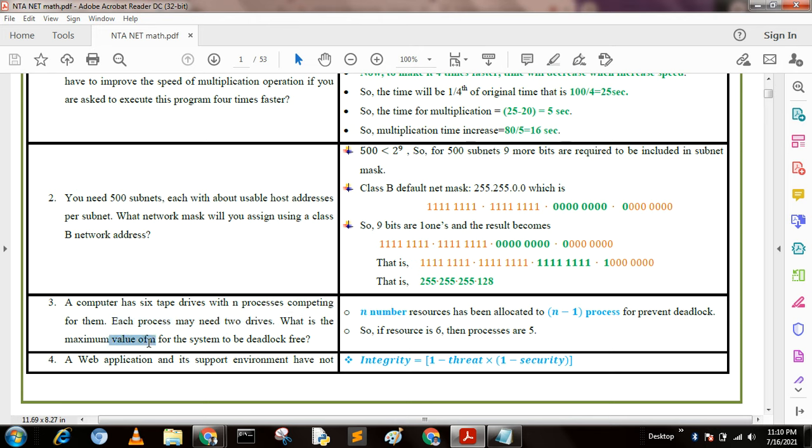What is the maximum value of n for the system to be deadlock-free? We know that for n resources allocated to n-1 processes for deadlock prevention. So if resources are 6, then processes are 5.